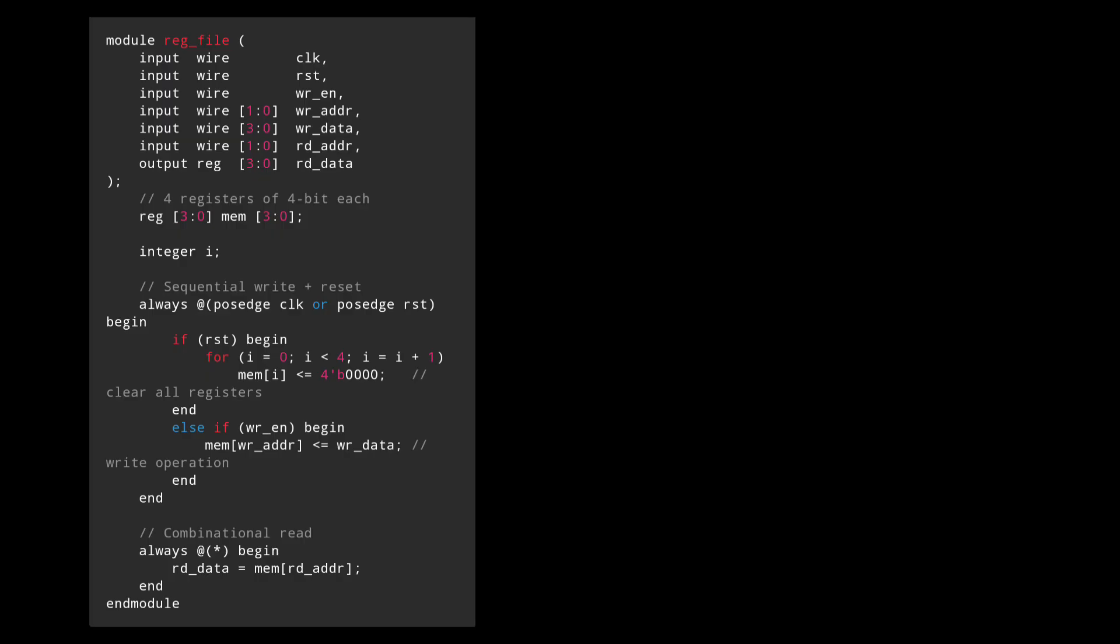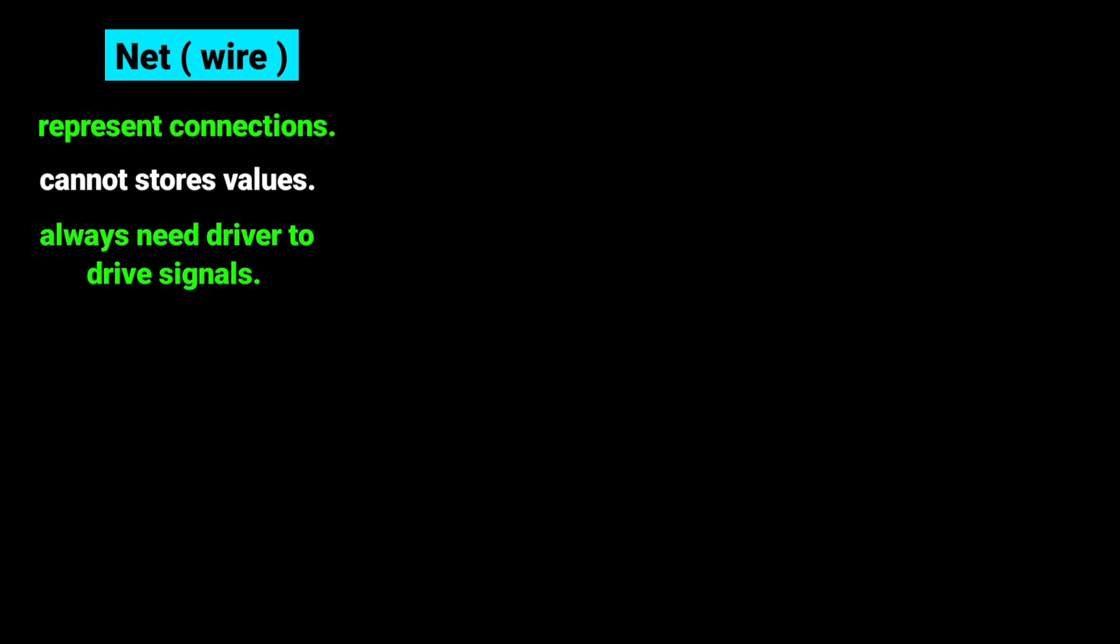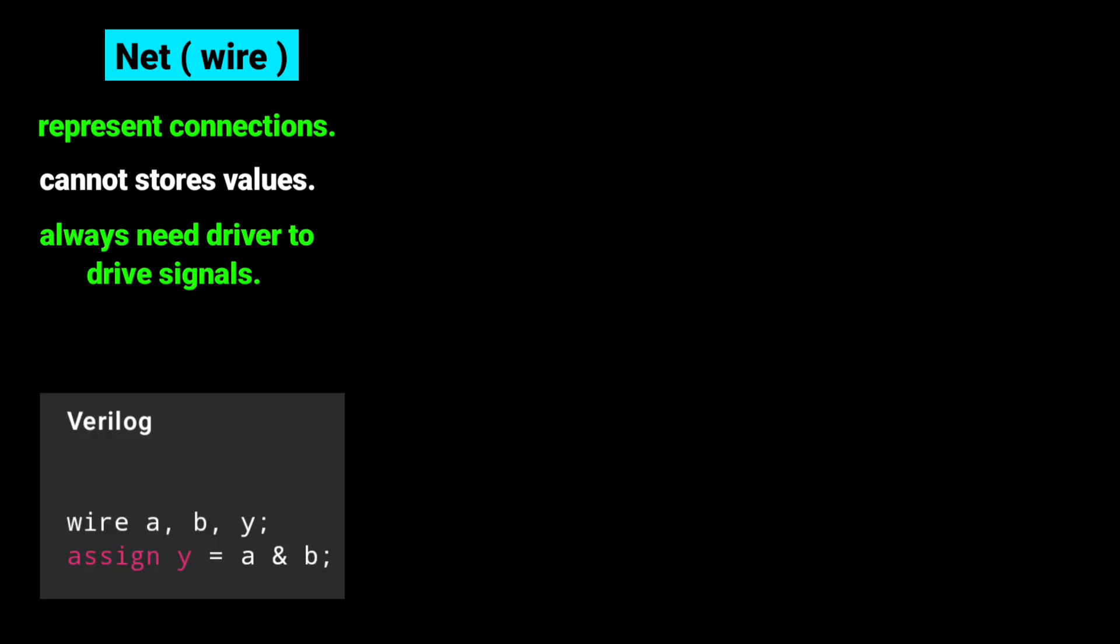In Verilog, data types are very important because they decide how signals are represented, stored, and updated. This is not just theory. It directly affects how you write RTL for design and also how you verify it in a test bench. First one is Net.